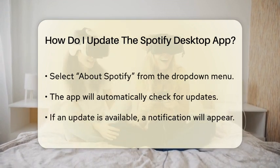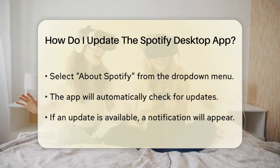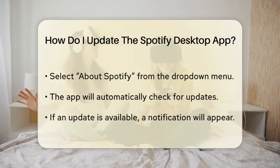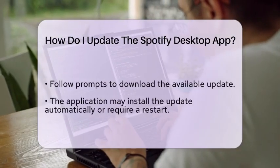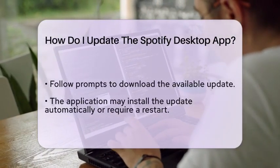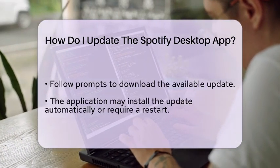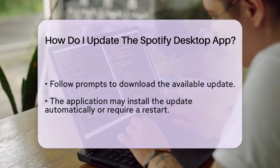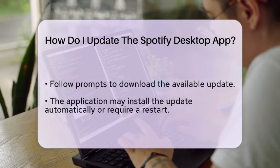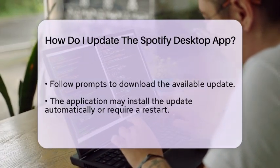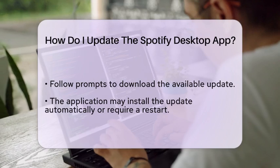If an update is available, you will see a notification indicating that a new version is ready to be installed. You will typically see an option to download it. Follow the prompts to begin the download process. Once the download is complete, the application may automatically install the update, or you might be required to restart the app for the changes to take effect.